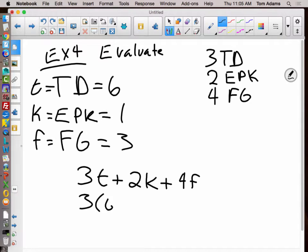So touchdowns worth six, extra kicks are worth one, field goals are worth three. Three times six is 18, plus two times one is two, plus four times three is 12.